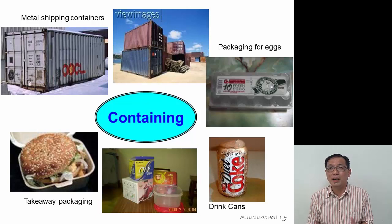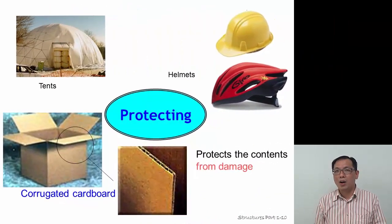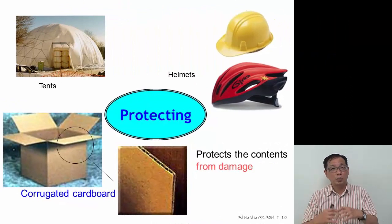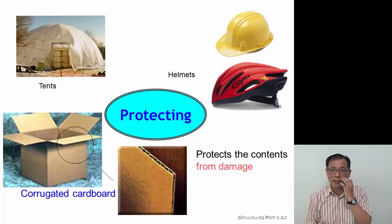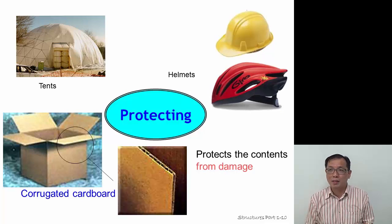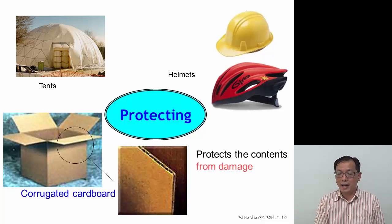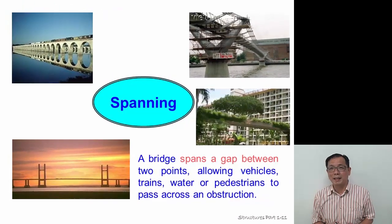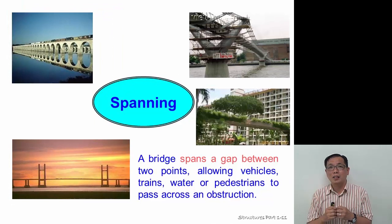Protecting: we use things like tents to protect ourselves from the weather. We have corrugated cardboard which protects items from being damaged, and of course your bicycle helmets which protect your head when cycling in case of a fall.